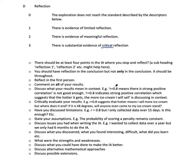If it's 48 degrees, will anyone even come to my ice cream stand? That would technically be called extrapolation. Mention why your model might not work all the time. Have you discussed limitations? For example, r = 0.8 but I only collected data over 15 days — I should have done it over 60 days. State your assumptions: 'I'm assuming the probability of scoring a penalty remains constant,' even though it doesn't. Discuss issues you had when writing the IA.